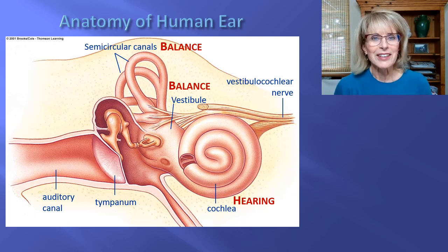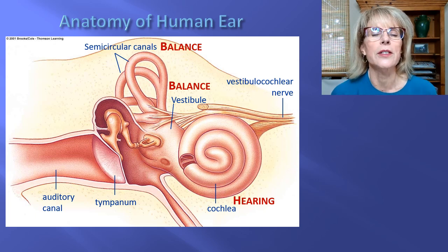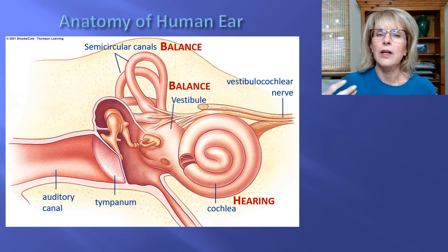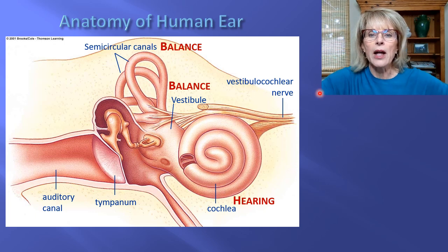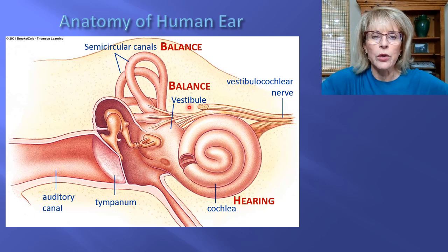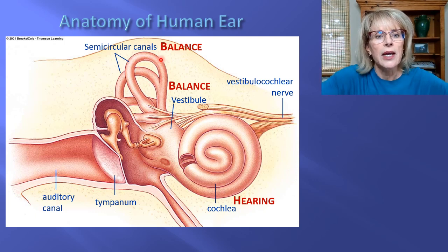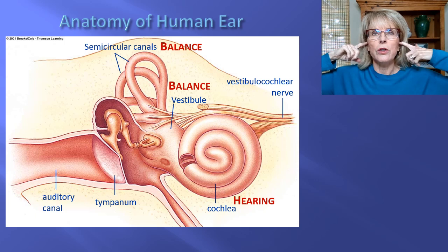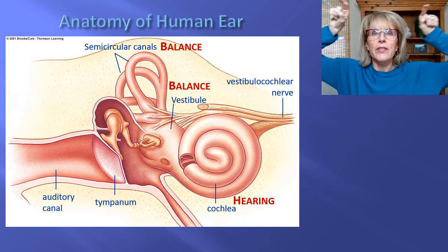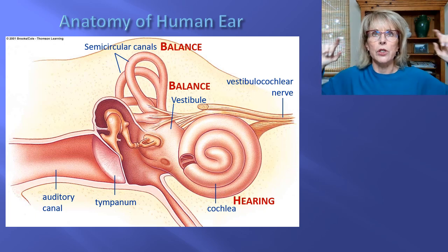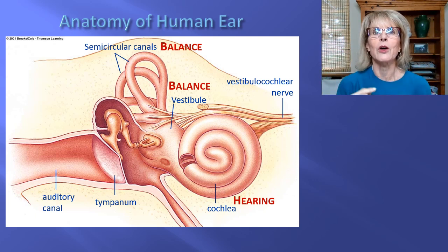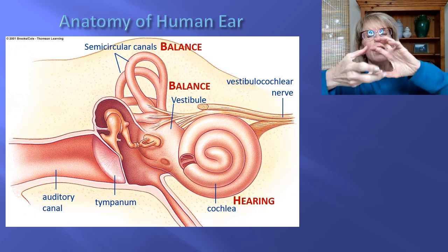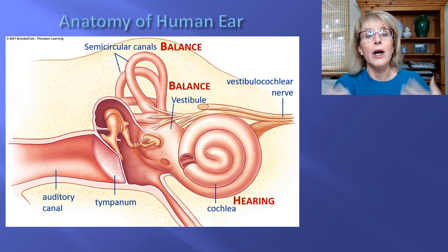The inner ear area — including the cochlea, the semicircular canals, and the vestibule — does more than allow you to experience sound. Your sense of up and down is in the vestibule, whereas your sense of whether or not you're rotating in space comes from the three semicircular canals. In each ear, one semicircular canal detects a cartwheel motion, one detects a somersault, and one detects a pirouette. Your brain takes input from all three and decides how your body is rotating in space.